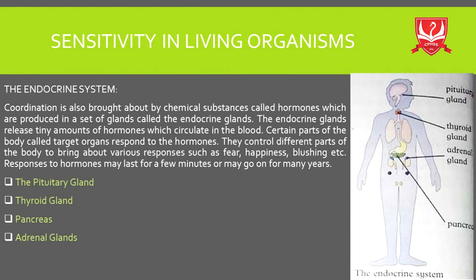Suppose the urine is diluted — the water concentration is high — then the anti-diuretic hormone functions to ensure that water is reabsorbed so that urine becomes more concentrated in solutes. In this case, the hormone is released and acts on the kidneys. So the kidneys are the target organs here.